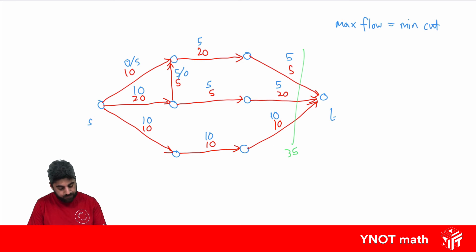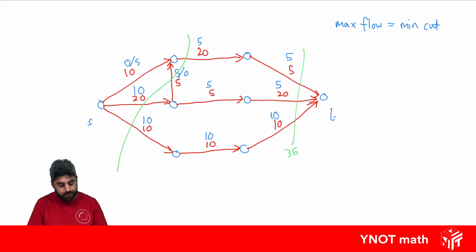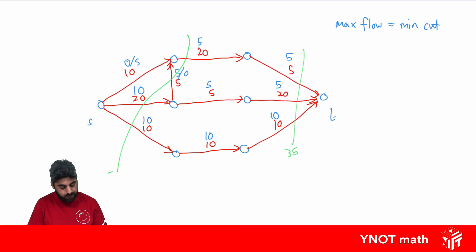Let's look at another cut. Again we've separated our source and sink, and we want to add up every edge that we've cut through, but only if they start on the source side. This edge starts from the source side, but this one starts from the sink side, so we do not add it up. The edges starting from the source side give us 10 + 20 + 20 = 50 for that cut.